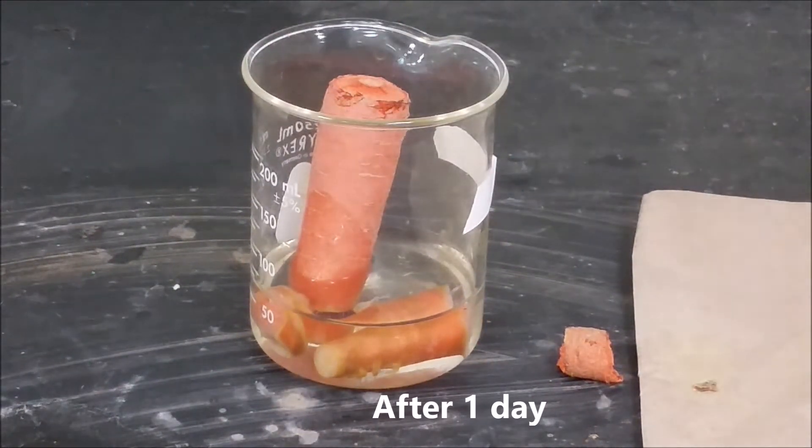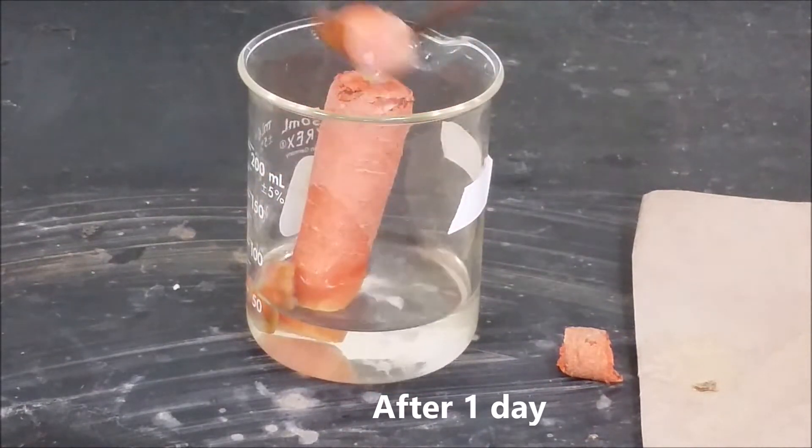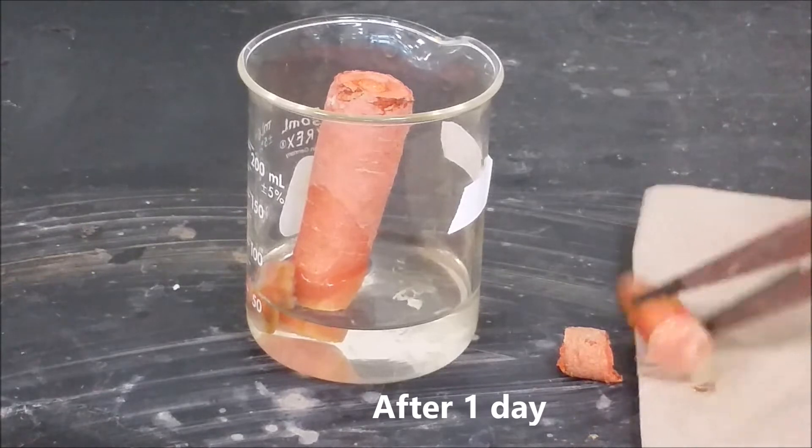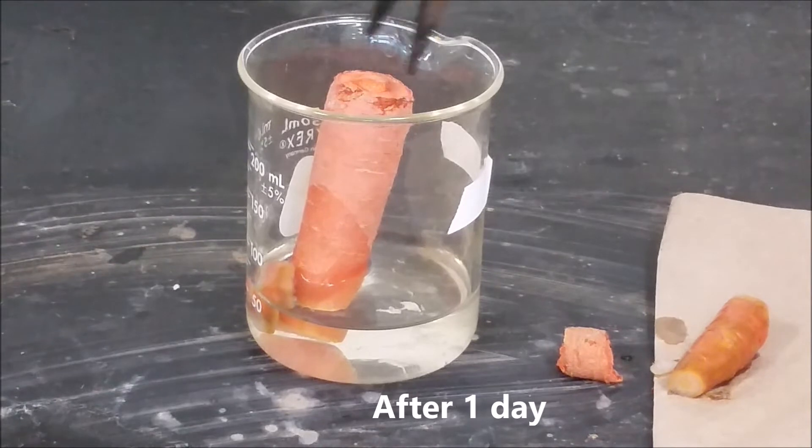The carrot is still orange, but there are spots that are white relative to the rest. Some of the smaller chunks are now white.